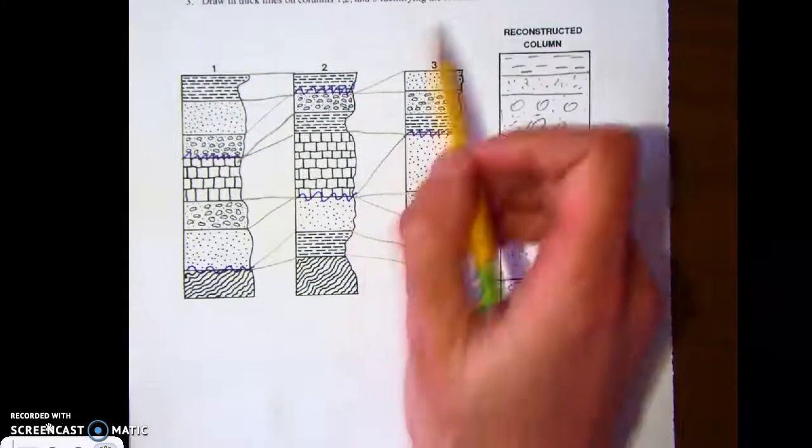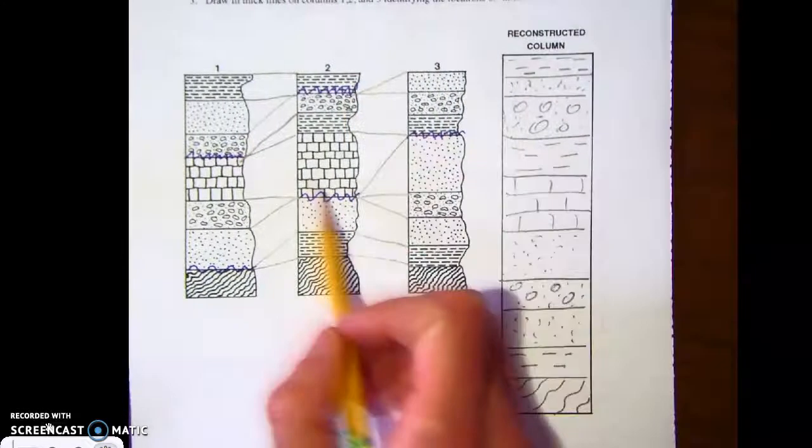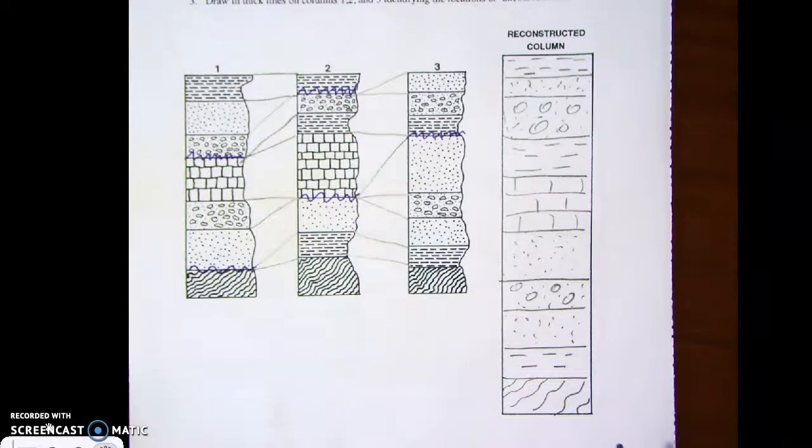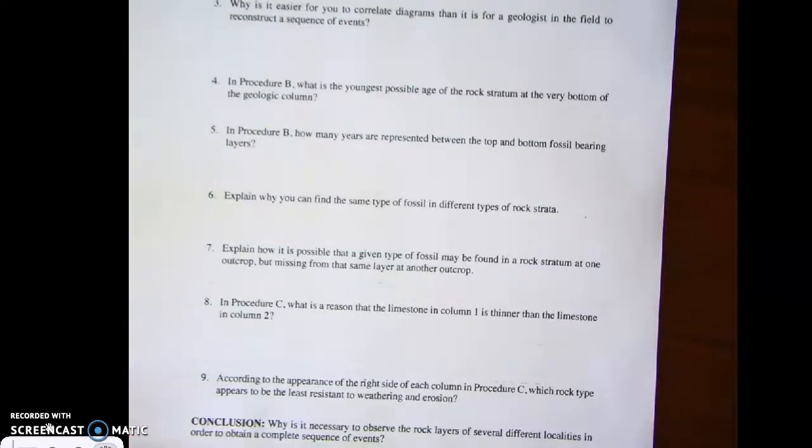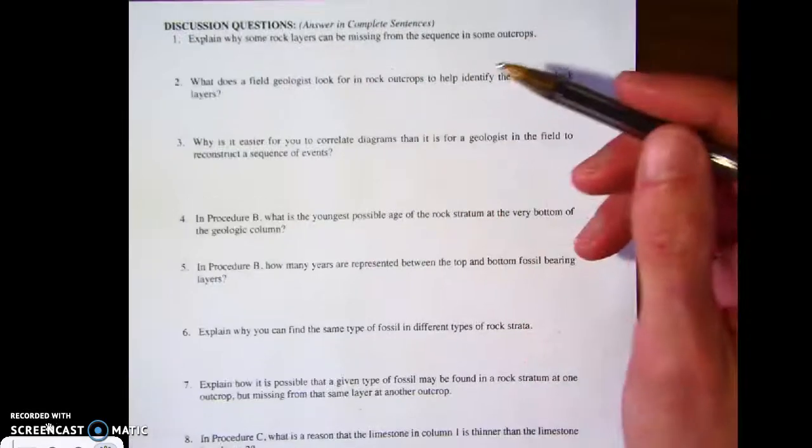Okay, so that's our completed column for part C. And we drew in the unconformities - that's where those would be. I think that's it for procedure C. Now let's take a quick look at the questions. Again, I'm not going to write up the answers for you, but I'll give you some things to think about as you write your answers.